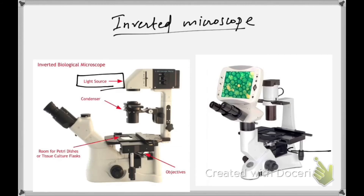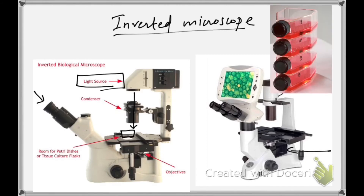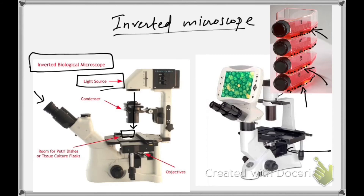In the inverted microscope, the light source is on top and it passes through the sample from above. When you look through the eyepiece you are actually seeing the bottom view of your culture. Cells generally grow at the bottom of the culture vessel, so we need to observe through the bottom side of the culture tube or flask — hence we need a special inverted biological microscope for animal cell culture.